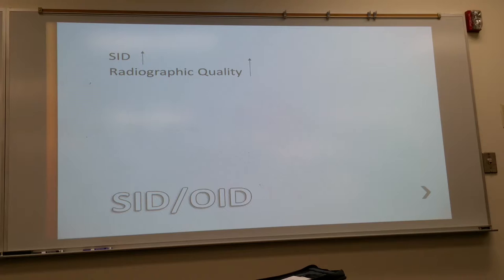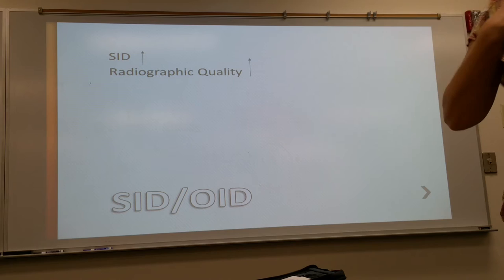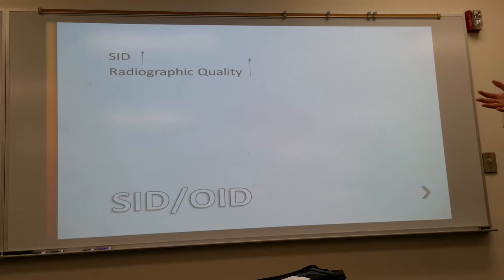And so we want to get as much distance as we can reasonably. We're not going to back up 10 feet because what happens as you increase your distance? What do you have to do to your exposure factors? Bump it up. Increase it. Direct square law. So there's a compromise there. You want an increased distance and get the heart to true size, but then you don't want so much distance that you're going to have to give the patient more radiation. So that's why we do chest x-rays at 72 inches.